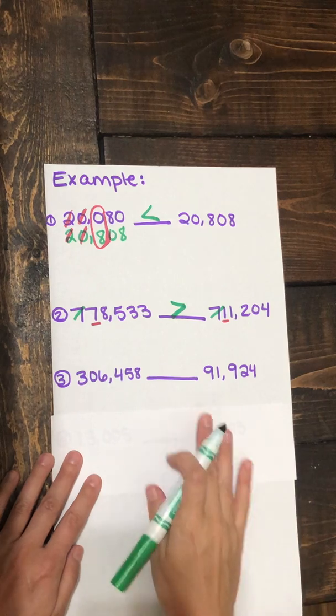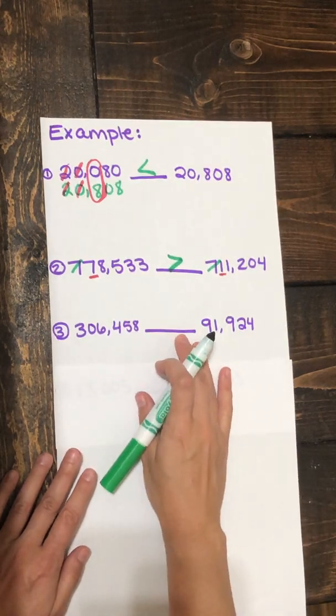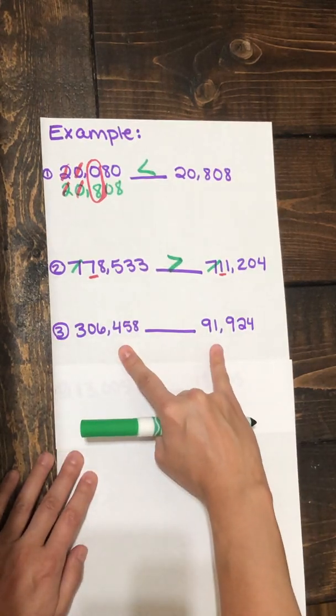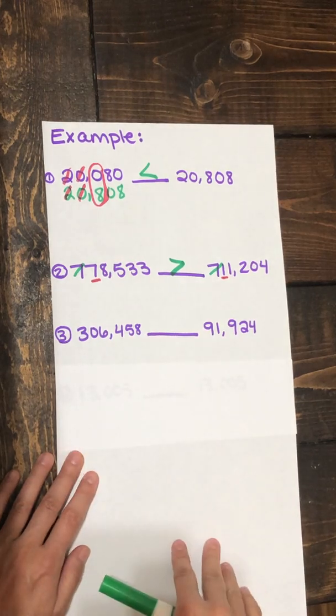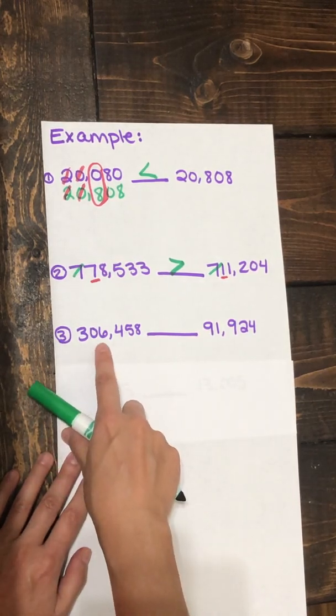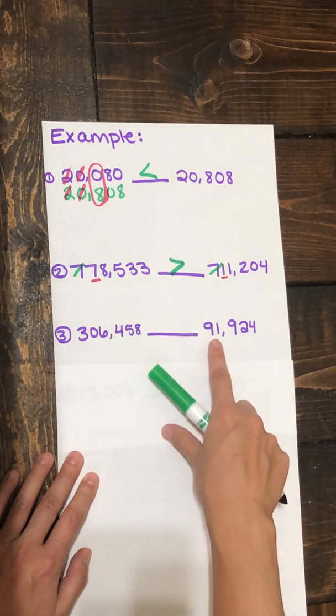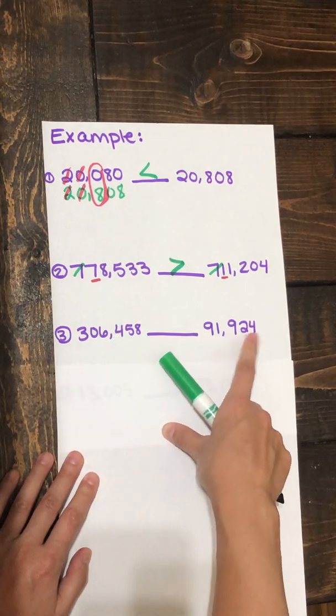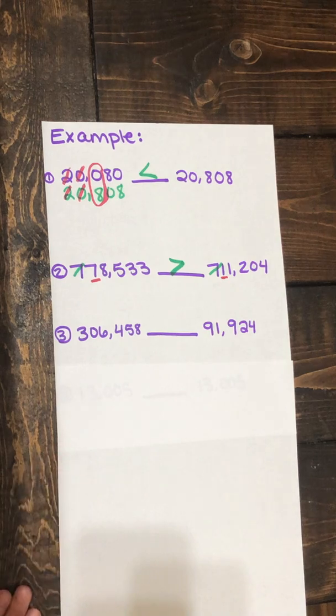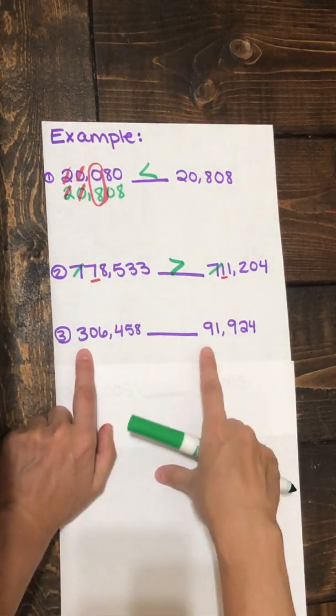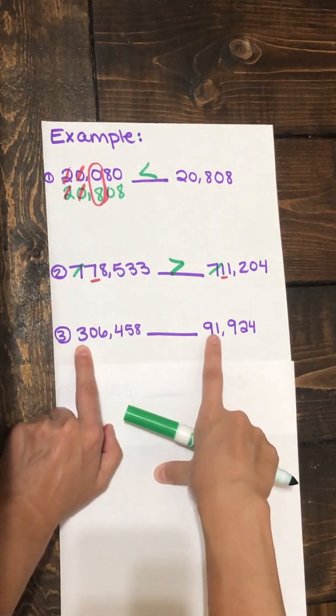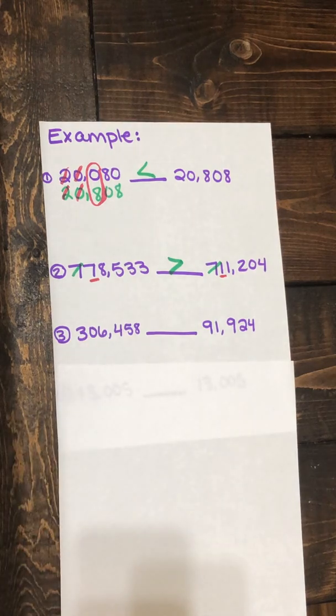Think about the number. See if you notice anything different about these two numbers. Let's read them first. 306,458 and we're going to be comparing it to 91,924. Now, one thing you may think is a three and a nine so the nine must be larger. However, we need to stop and think about place value.